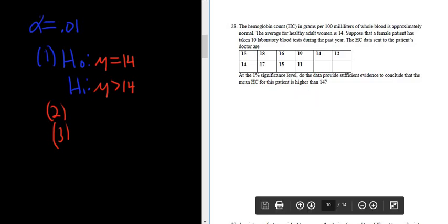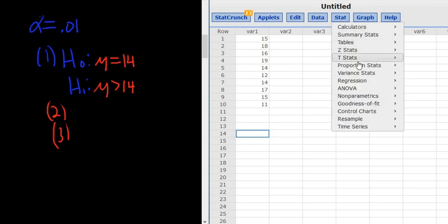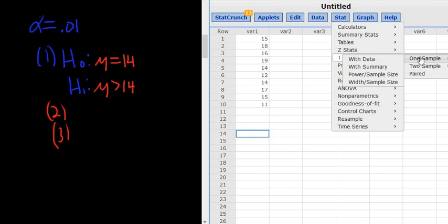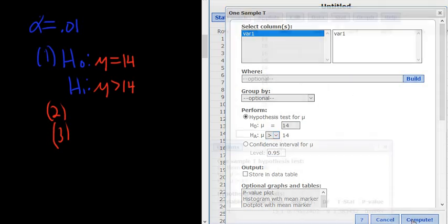Okay, so I have StatCrunch open here already. And I've typed in all of the data. So you go to Stat, T, one sample, and it's with data because they actually give us the data. Again, it's Stat, T, one sample with data. Then you can select the data. And then we just have to change this to 14 and change this to greater than. So everything looks good. Click Compute.